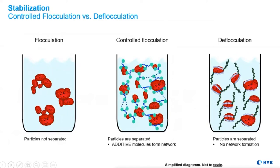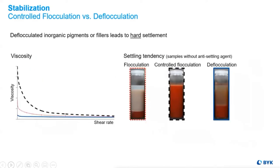Flocculation is never desired, but controlled flocculation still provides separation of particles for improved benefits, whereas true deflocculation completely separates to the primary particle. This is important to understand when evaluating the settling properties of pigmented coatings.